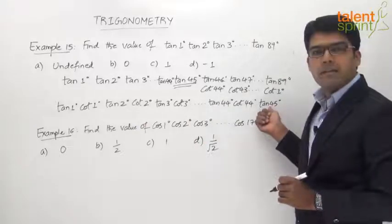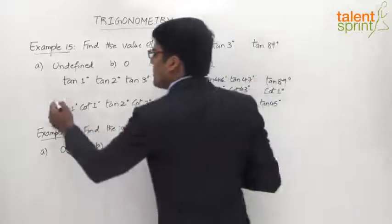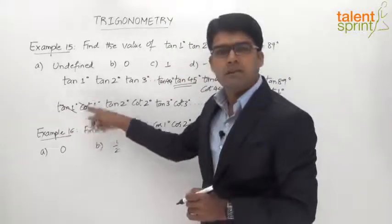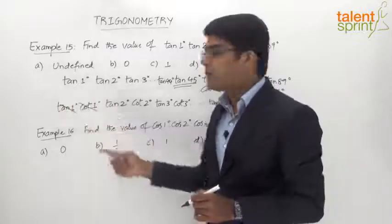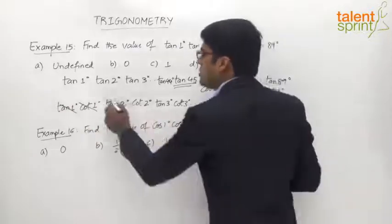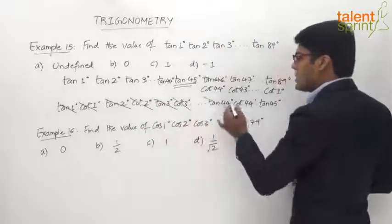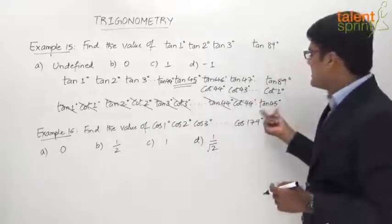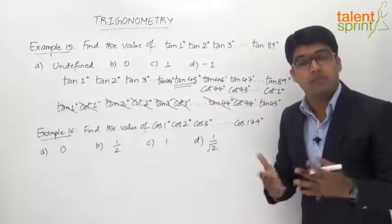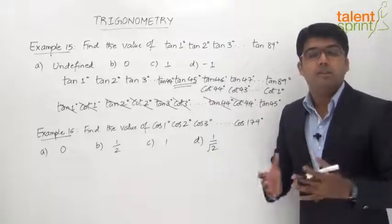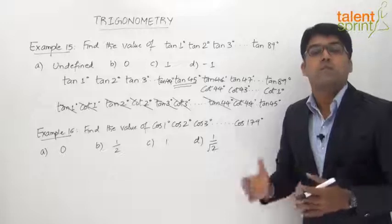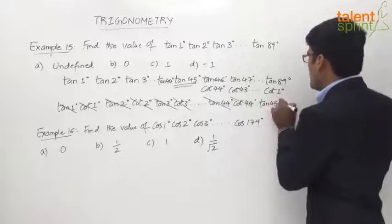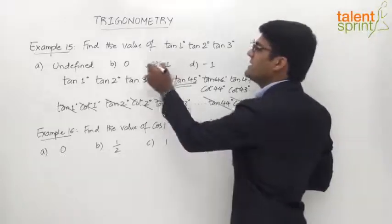Each pair tan(x) × cot(x) = 1, since cot(x) = 1/tan(x), so tan(x) × (1/tan(x)) = 1. Likewise tan 2° × cot 2° cancels, tan 3° × cot 3° cancels, and so on up to tan 44° × cot 44°. The only term left in the series is tan 45°, and we know tan 45° = 1. So the answer is 1, which is option C.